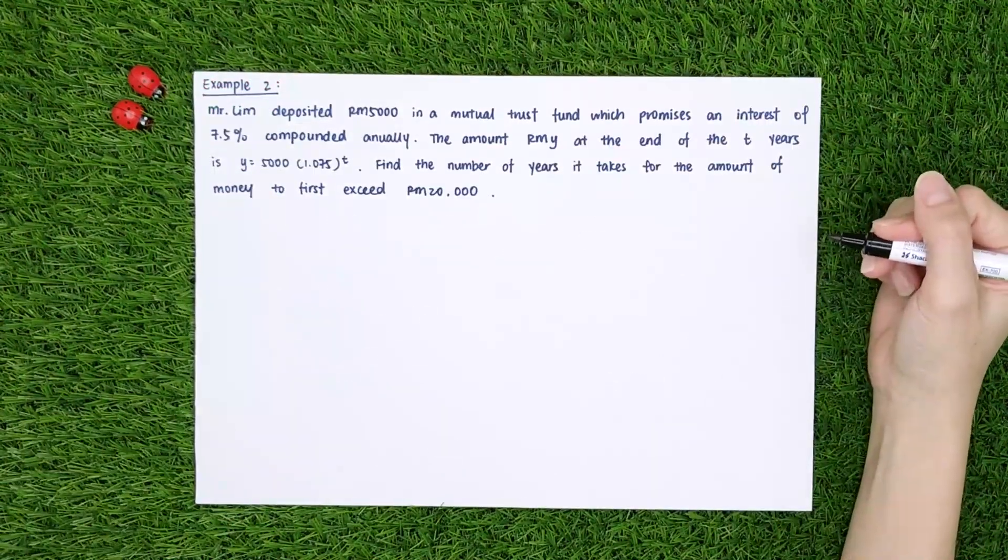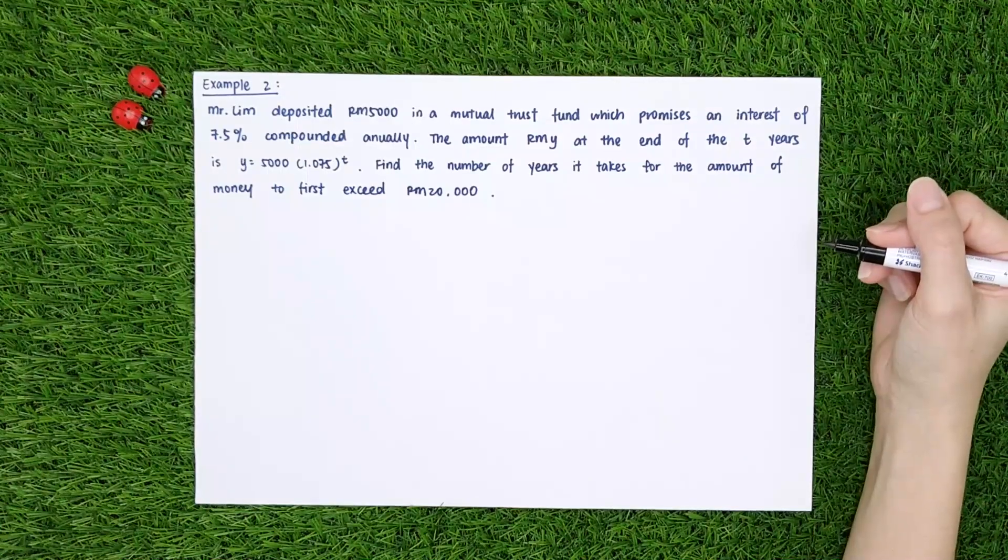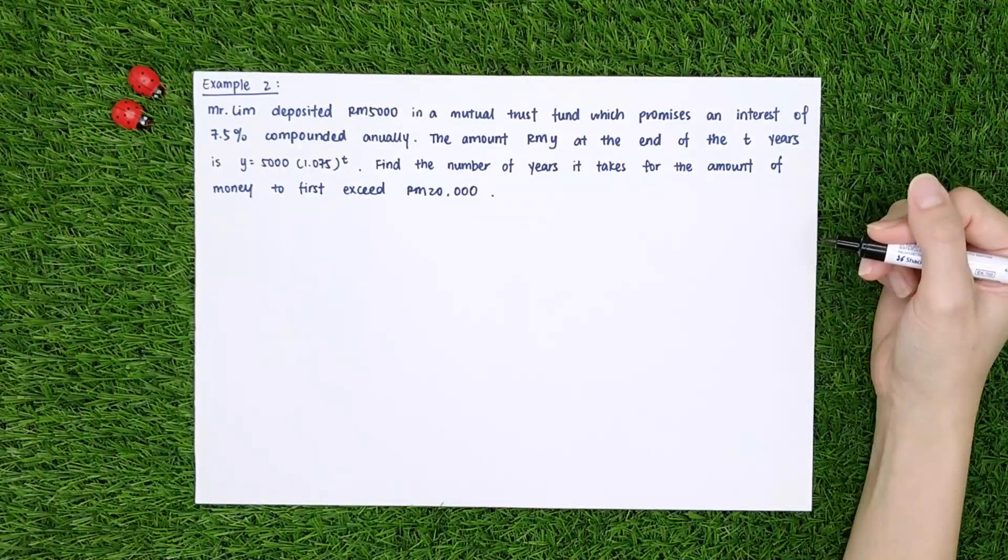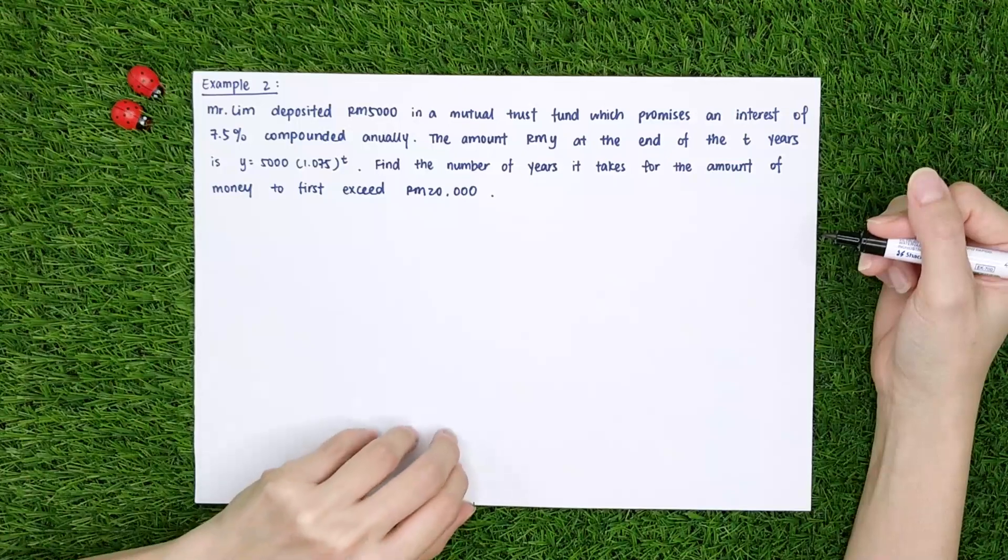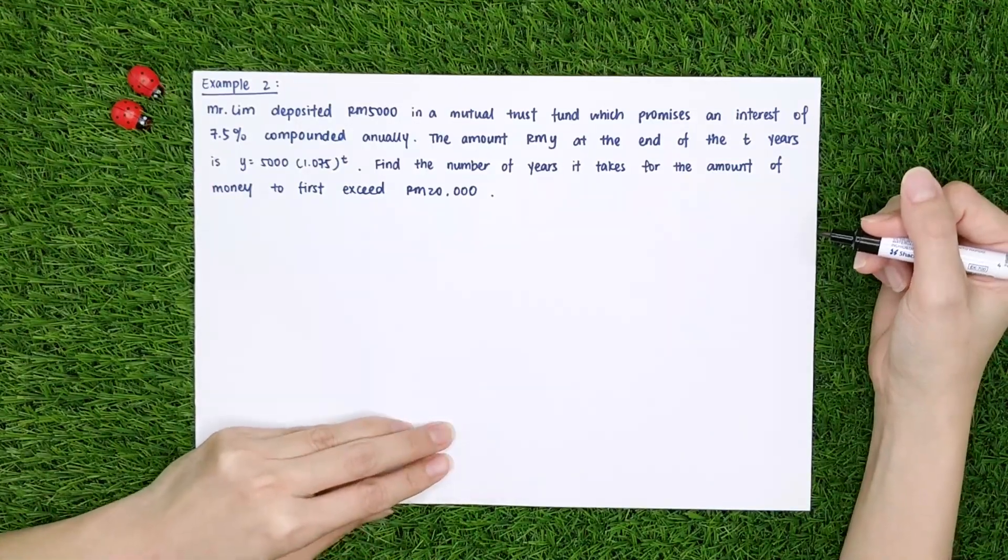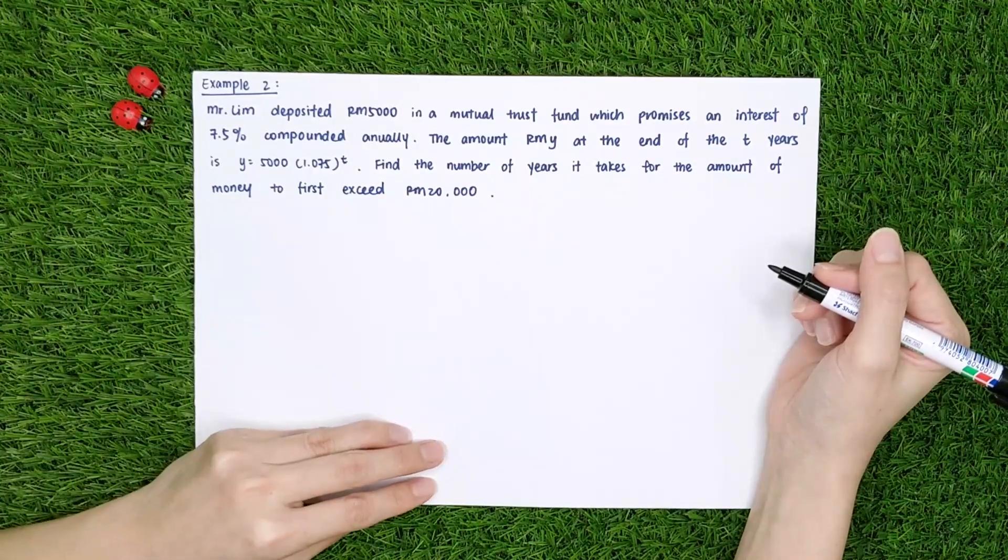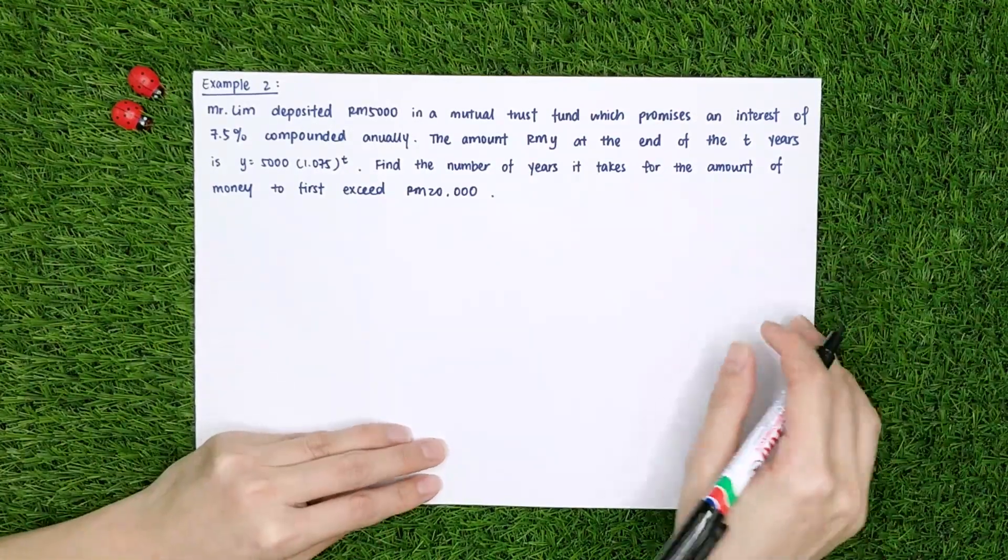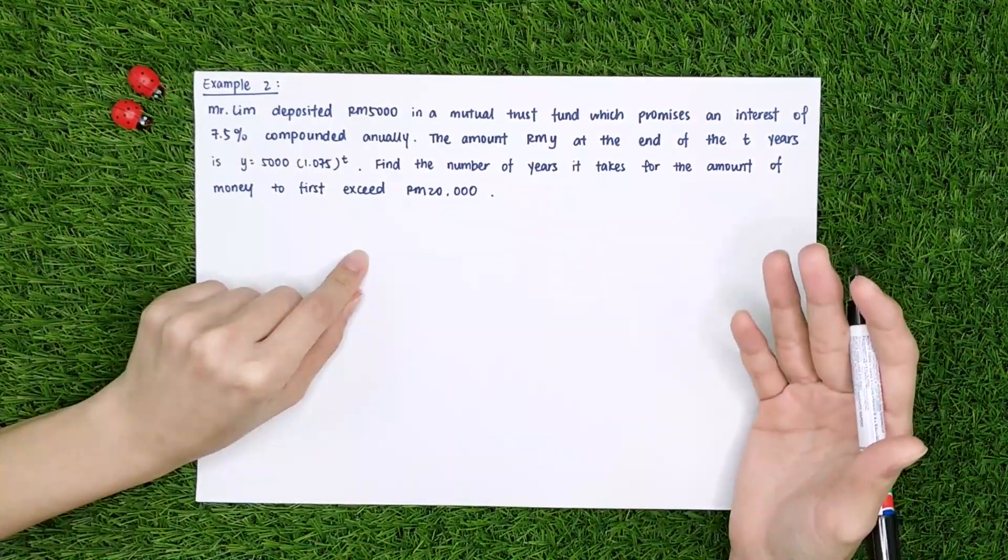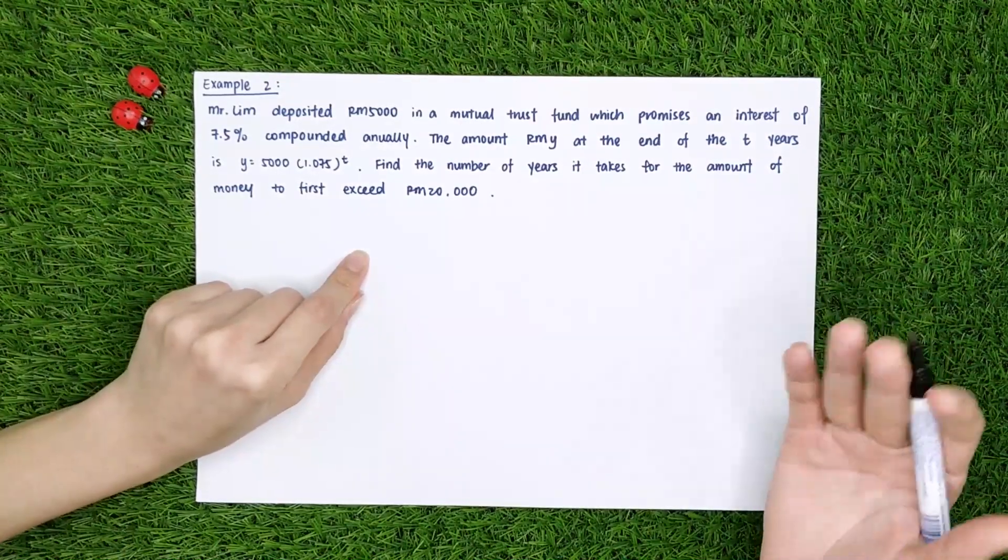Example 2. Mr. Lin deposits $5,000 in a mutual trust fund which promises an interest of 7.5% compounded annually. The amount at the end of 3 years is given. Find the number of years it takes for the amount of money to first exceed $20,000. Okay, before we start to do the question, we need to understand what the question asks.